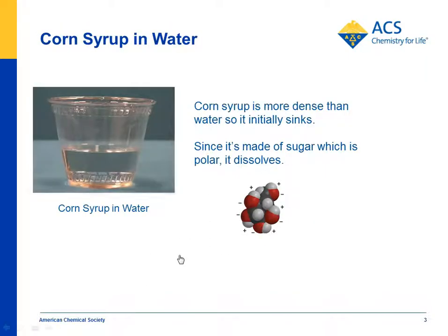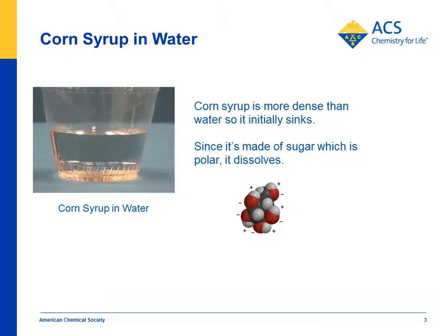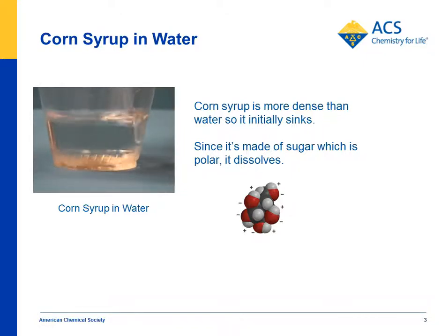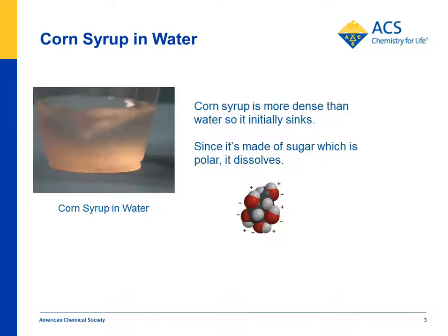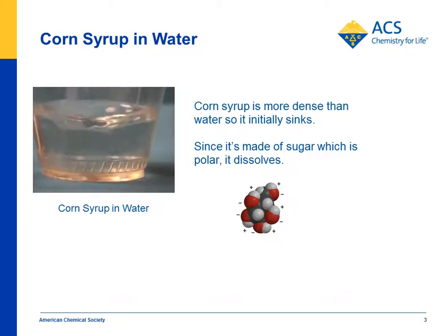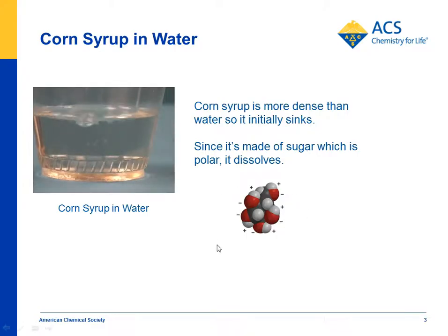Students also put corn syrup in water — that's basically sugars — and mix it with a straw. Originally, it just sinks to the bottom and doesn't seem to dissolve, but that's really because it's pretty dense. Sugar is a pretty big, heavy molecule and it falls to the bottom, but if you swirl it around with a straw, it will dissolve. That should make sense to students based on what they know about the water molecule and the sucrose molecule, which has a lot of areas of polarity on it.